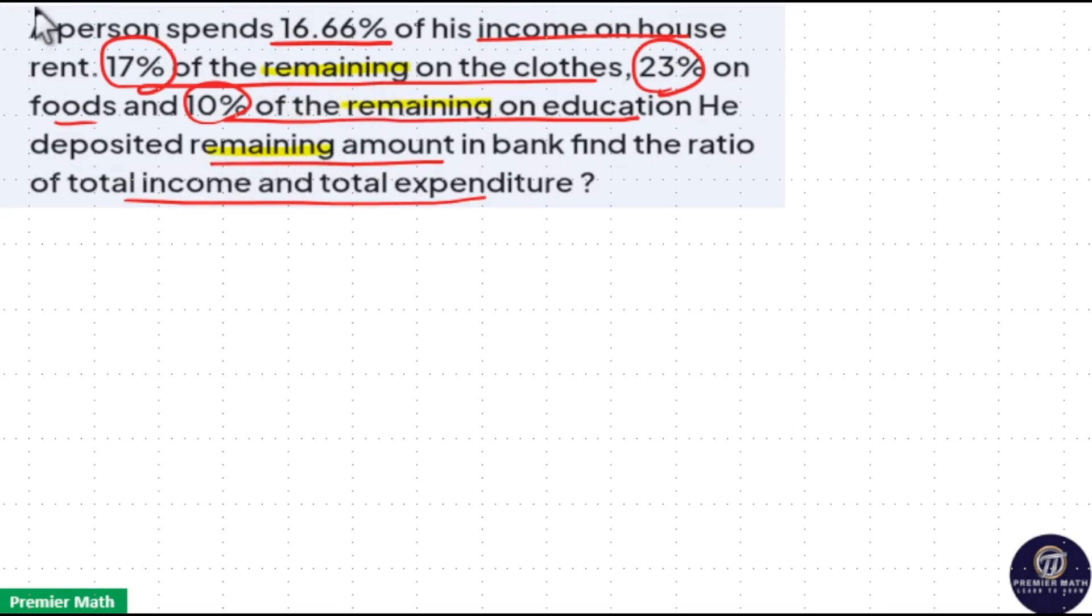Now 16.66% means 16.66 into 6 will give you around 100%, that is 99.96%. So the fraction is 1 by 6. Consider 6 parts as the income, then 1 part he spent on rent.